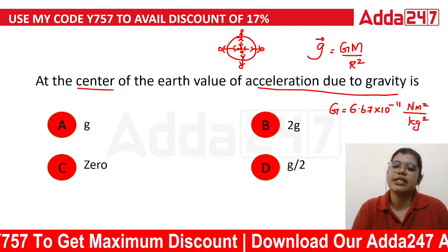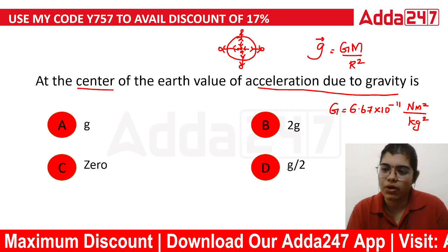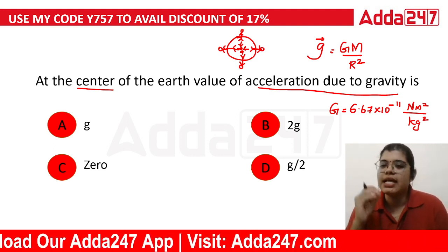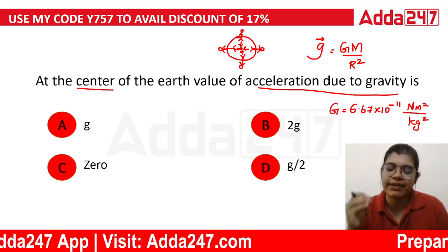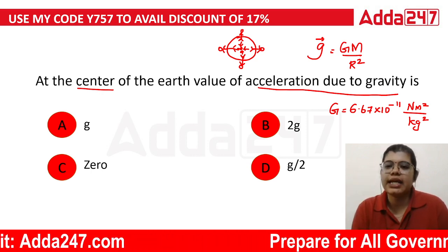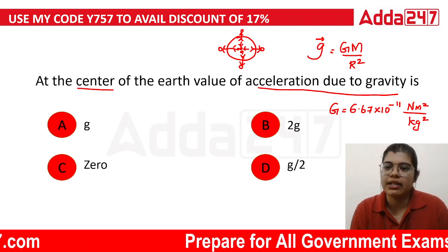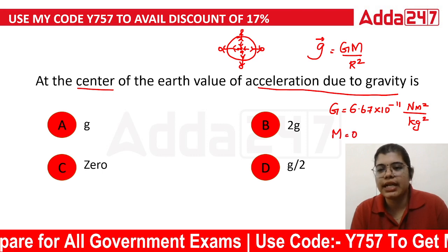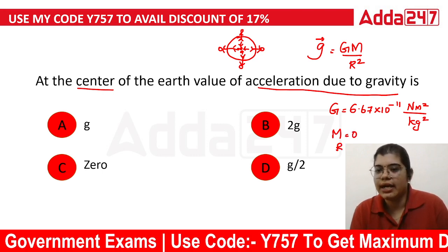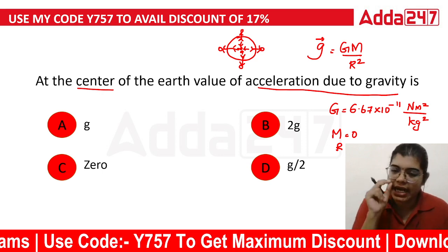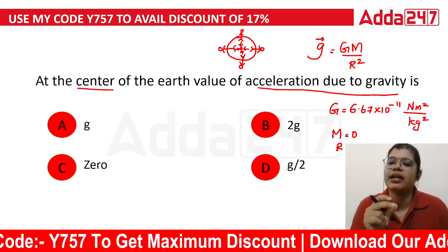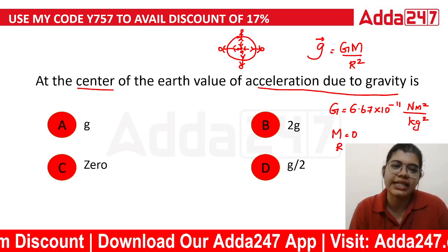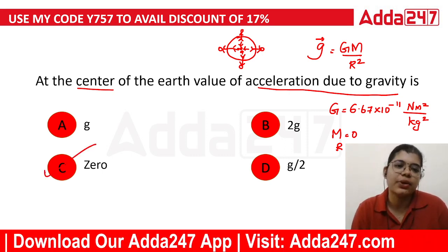The unit of the universal gravitational constant, capital G, is 6.67 × 10⁻¹¹ Newton meter square per kilogram square. This involves M — the mass of the earth — and the radius of the earth. At the center of the earth, there is no mass acting. Mass tends to zero at the center of the earth, so we have to consider that.